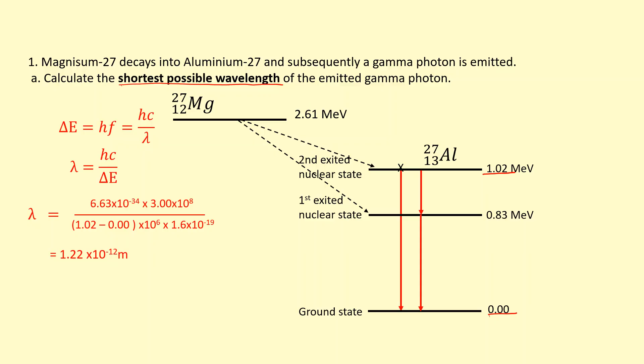This gives us a wavelength of 1.22 times 10^-12 meters, which is around 0.001 nanometer. So that's definitely a gamma wave.